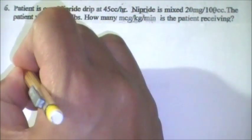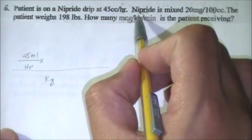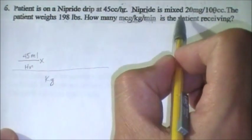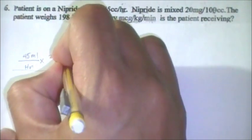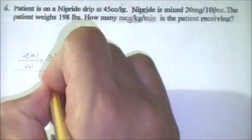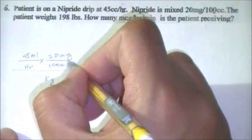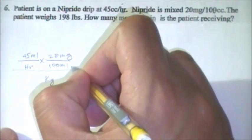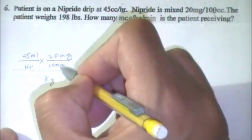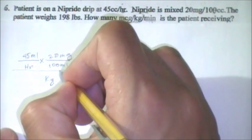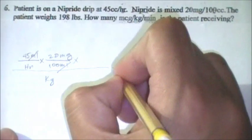Then we go ahead and write what is the stock on hand — nitropride mixed with 20 milligrams per 100 cc. So let's put 20 milligrams as our numerator and 100 mL as our denominator. We put mL in the denominator so we can cancel the mL in the numerator above. Cancel and cancel.